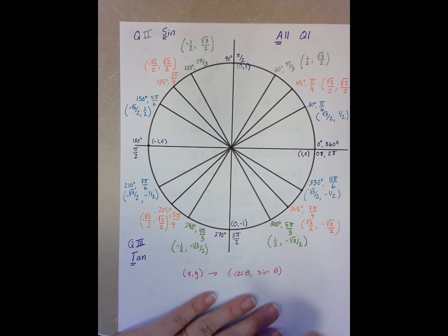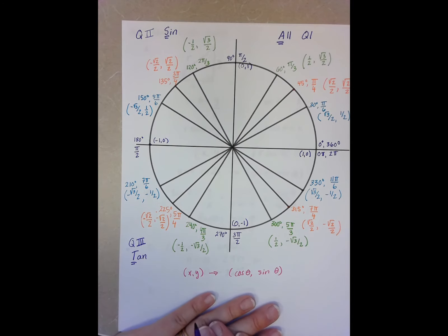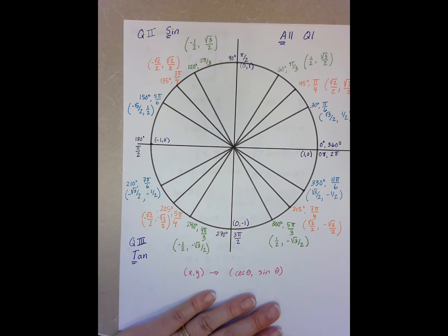In our last quadrant, we have our cosines being positive, our sines are negative. Positive divided by a negative gives a negative, so tan is negative. So our cosine is positive.